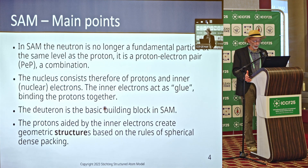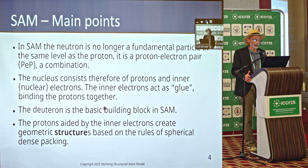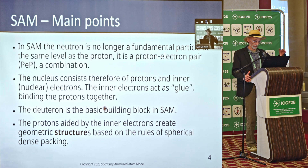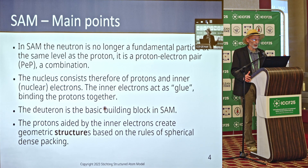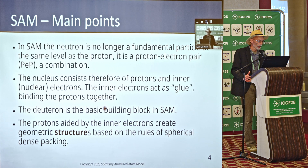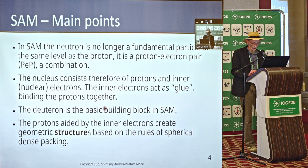Main points from SAM — just a quick recap. In SAM, the neutron is no longer a fundamental particle on the same level as the proton. It is a proton-electron pair, or PEP for short, so I will be using neutron and PEP interchangeably. The nucleus consists therefore of protons and inner nuclear electrons. The inner electrons act as glue binding the protons together. The deuteron is the basic building block in SAM — so instead of an alpha particle model, you could say it's a deuteron particle model. The protons, guided by inner electrons, create geometrical structures based on rules of circle dense packing.